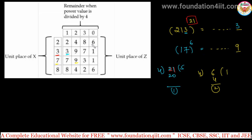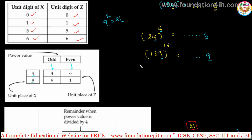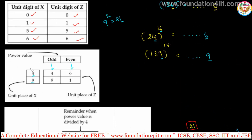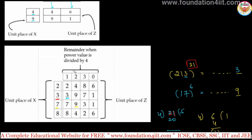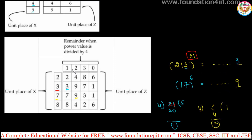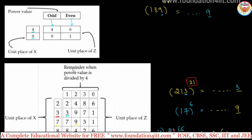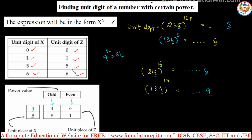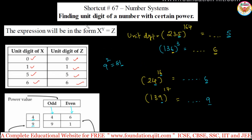So this rule applies only for 2, 3, 7, 8 — you need to remember this cycle table. The remaining digits are easy: 0, 1, 5, 6 are direct; 4 and 9 depend on even and odd power; and 2, 3, 7, 8 use the remainder when dividing the power by 4. For any number given as a power expression, we can find the unit digit using this table.